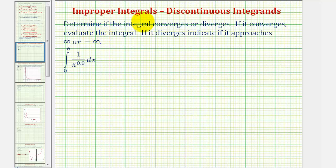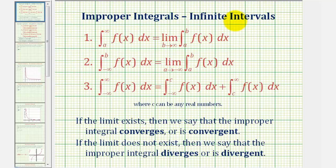Welcome to two examples of improper integrals where we have discontinuous integrands on the interval of integration. Let's begin with a quick review. Remember there are two types of improper integrals. The first type is when the interval of integration is an infinite interval, or when we have an upper or lower limit of integration of either negative infinity or positive infinity, or in some cases both. We can write these integrals as the limits of integrals as seen here.